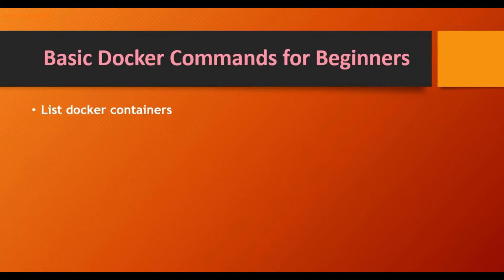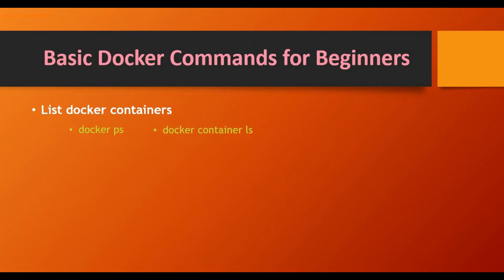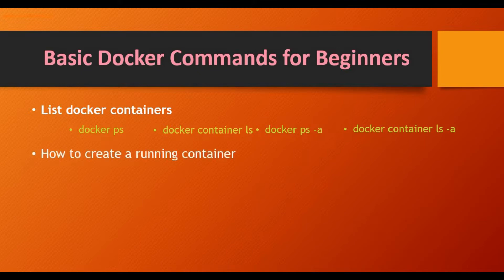Now let's look at how to list containers. We already used docker ps — it lists only running containers. You can also use docker container ls, which does the same thing. To see all containers including stopped ones, use docker ps -a or docker container ls -a. These are day-to-day commands for getting container details.